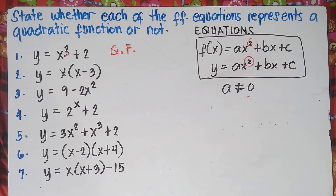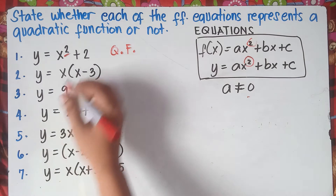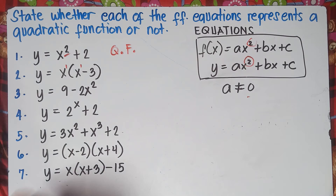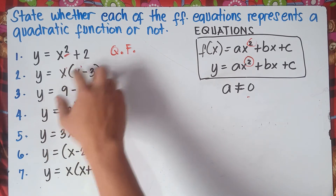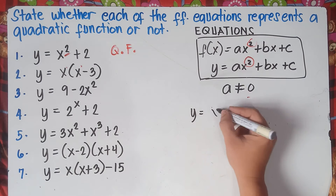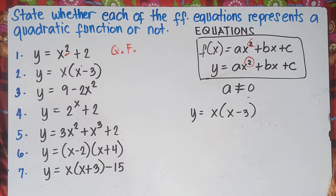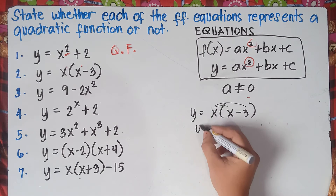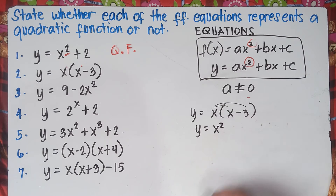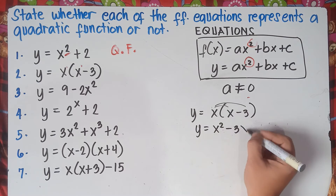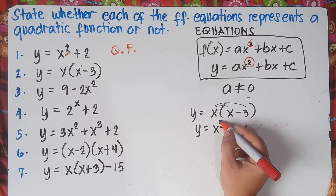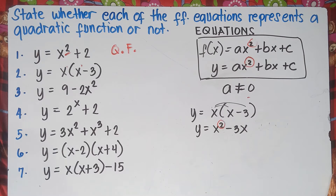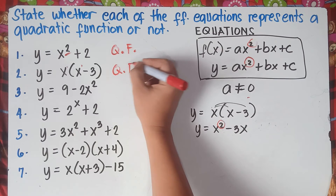Number 2: we're not yet sure because the exponent of x is 1, so we need to simplify first. y = x(x − 3). Using the distributive property: x times x = x², x times −3 = −3x. So y = x² − 3x. The highest degree is 2, therefore this is a quadratic function.